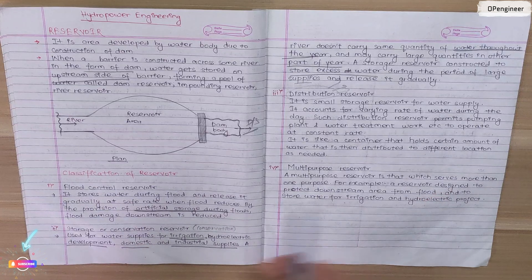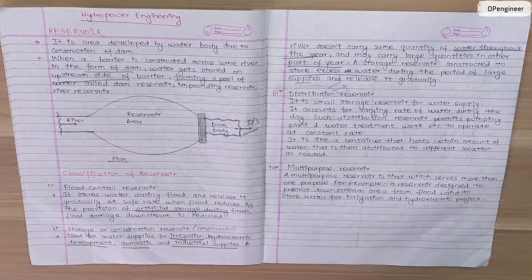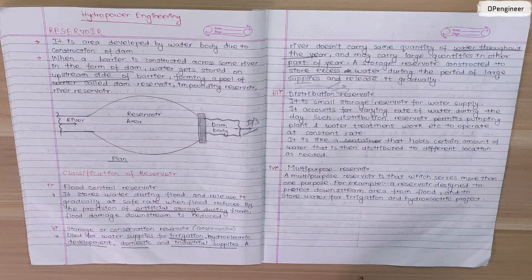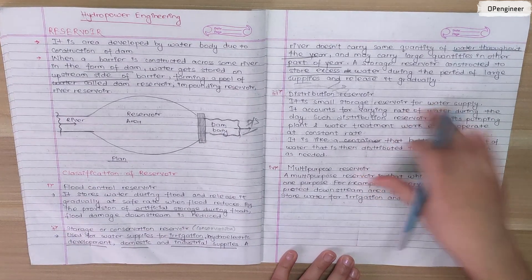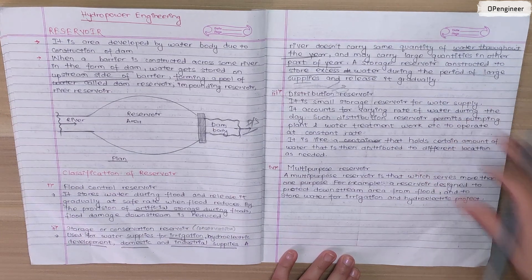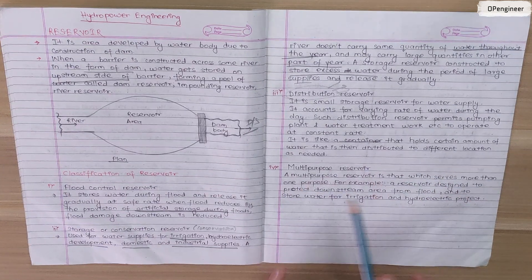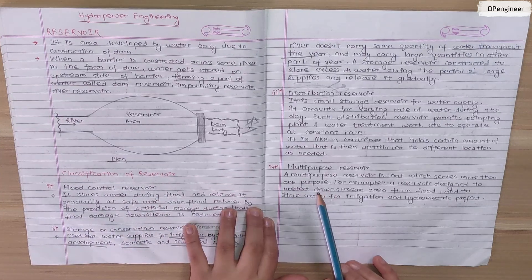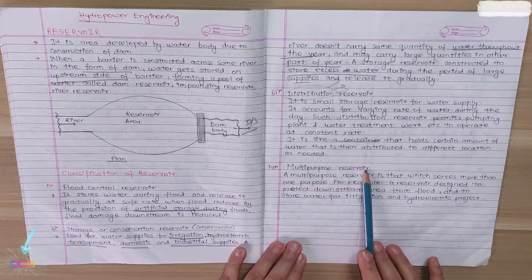It is like a container that holds a certain amount of water that is then distributed to different locations as needed. A distribution reservoir is a form of storage reservoir. A multi-purpose reservoir serves more than one purpose — it can function as a flood control reservoir as well as a storage reservoir, or a distribution reservoir.